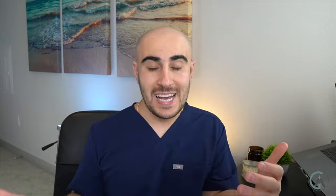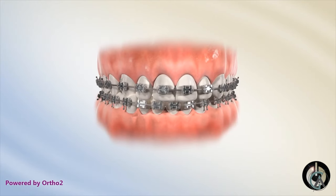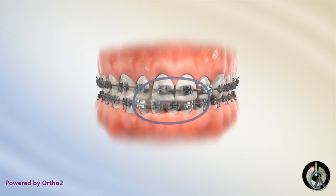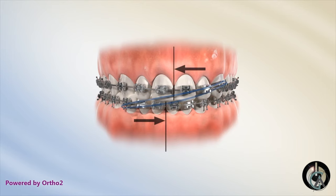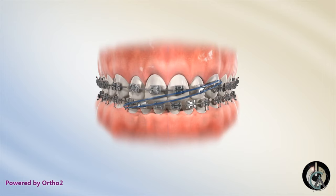The last pattern I want to talk about is called cross elastics. These are used if your midline is a little bit off and your arches aren't completely fitting together properly. Cross elastics can be used from an upper canine to a lower canine to fix your midlines. If it's a minor midline discrepancy, these cross elastics can coordinate the bite and get your midlines more aligned. There are a bunch of different reasons why your midlines might not be on, and I'll dive into that in another video.